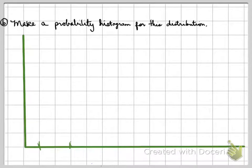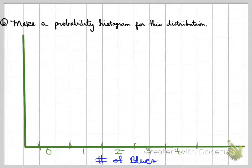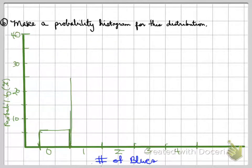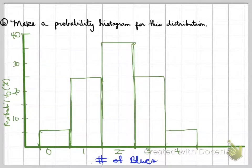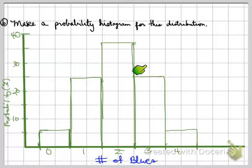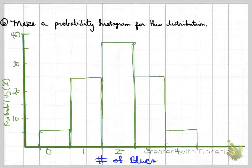We also need to make a probability histogram of the distribution. The x-axis is the number of blues and the y-axis goes up to about 40% probability. Plugging in the values, we can see this is an actual normal distribution — a bell curve — with the bars on either side of equal weight.